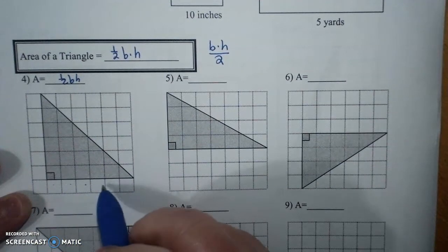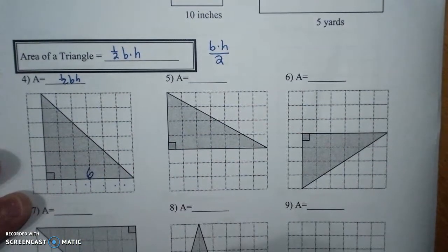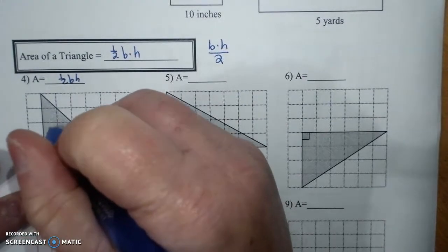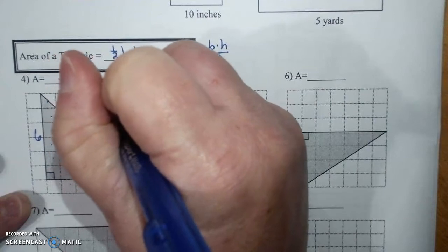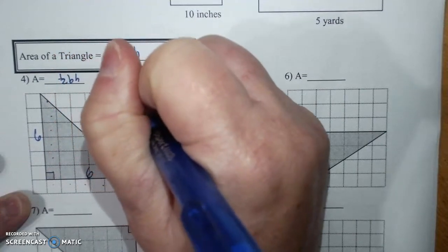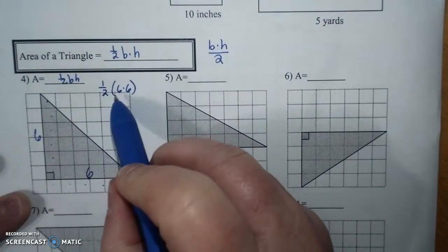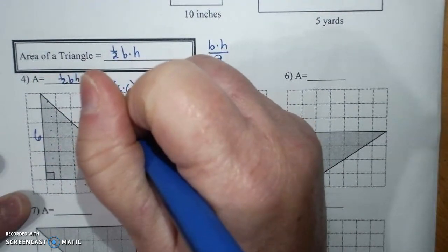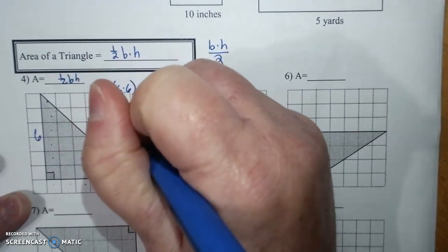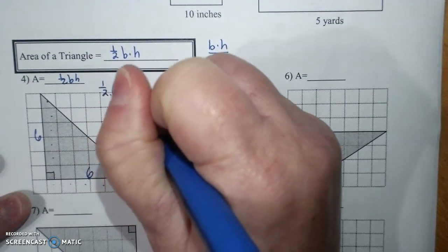One, two, three, four, five, six. That's six. One, two, three, four, five, six. That's six. So, it's half times six times six. Six times six is 36. Half of 36 is 18 units squared.